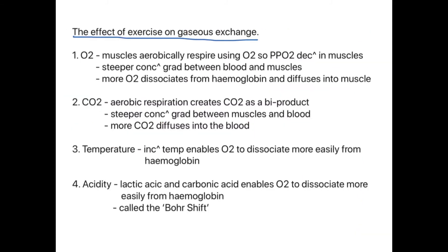We need to understand the effect of exercise on gaseous exchange — four key points, likely worth one to three marks in the exam. First, oxygen: during aerobic respiration, oxygen is used to produce ATP, so the partial pressure of oxygen in the muscles decreases. This creates a steeper concentration gradient between the oxygenated blood and the muscles, so more oxygen can dissociate from haemoglobin and diffuse into the muscles.